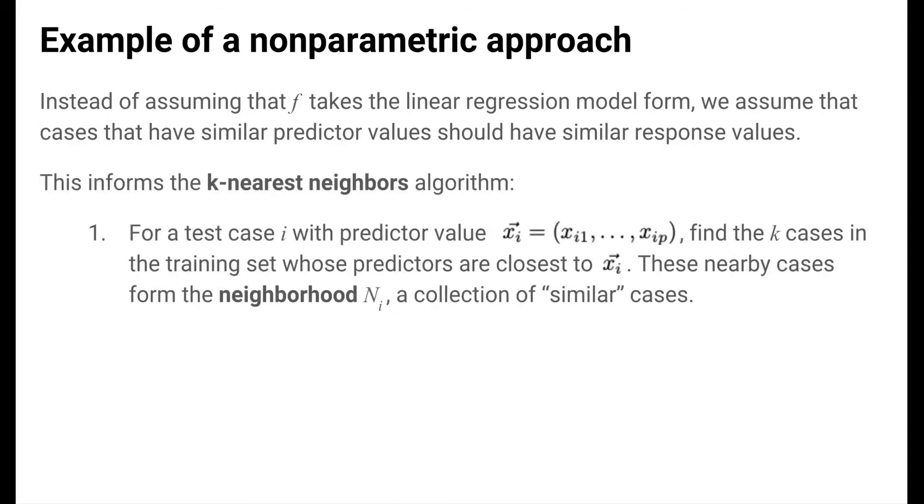This assumption actually informs the idea for a method called the k-nearest neighbors regression algorithm. This approach is as follows. For a case i in the test set with predictor value xi, we find the k cases in the training set whose predictors are closest to xi. These cases form the neighborhood ni. This neighborhood is the term that we give to the collection of cases that look similar to test case i.